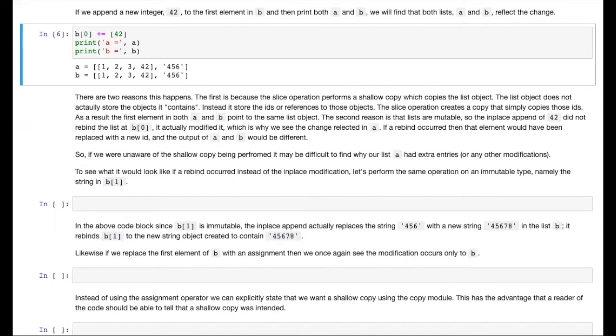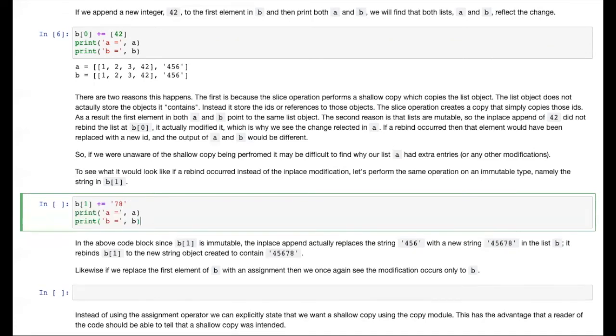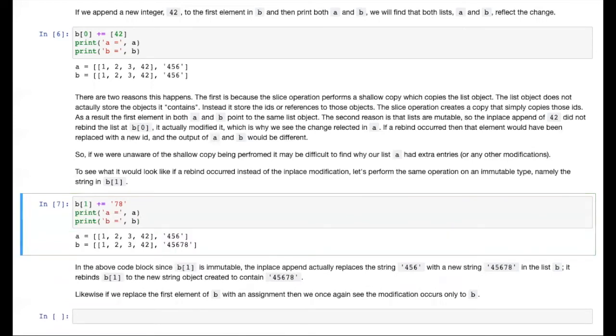Now, we know that lists are mutable, and so we are able to append 42 in place using the plus equals operator. Strings on the other hand are immutable, and that any change we wish to make results in a new string. So what happens if we attempt to append characters to our string 456? So I'm going to write B[1], and we're going to use plus equals again, but this time we're going to append a string. And I'm going to print out A and B again. And in this case, we see that A does not show the updated string. So why is that?